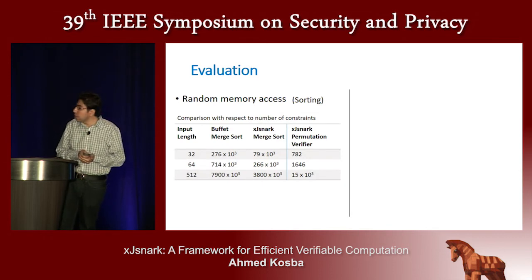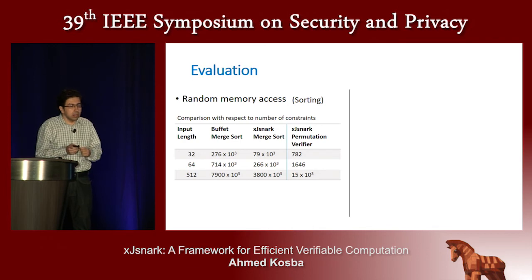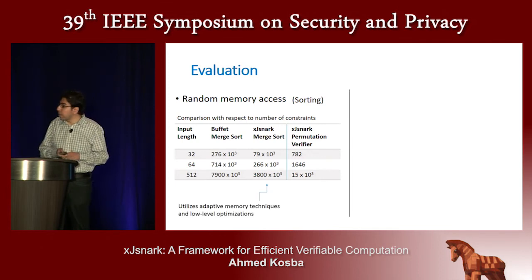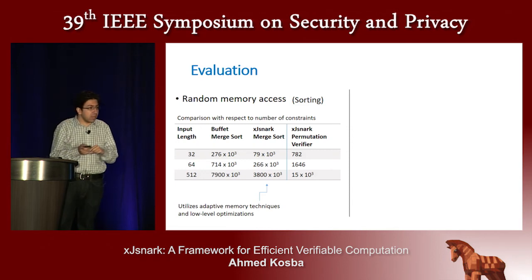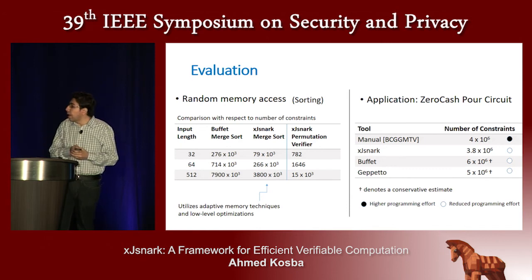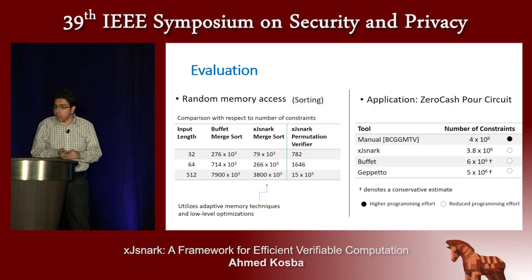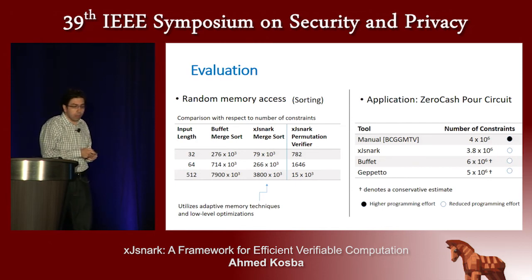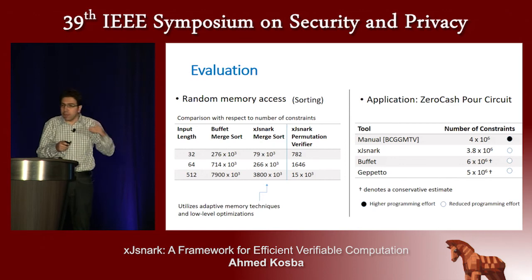For random memory access applications, writing merge sort code on XJSNARK already performs better than previous work, due to the adaptive memory techniques and low-level optimizations. If the programmer chooses to use the permutation verifier as in the sorting example shown, it gets orders of magnitude better. We also took one of the applications that had been developed manually and rewrote it using XJSNARK. Our framework was able to match the manual implementation of the ZeroCache. While it is always possible to improve a manual implementation further, we can now bring automated tools to the level of manually developed tools for some applications.